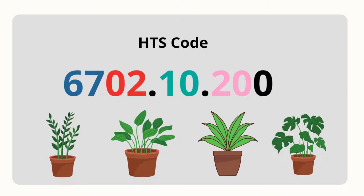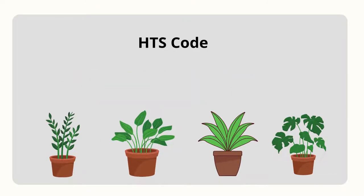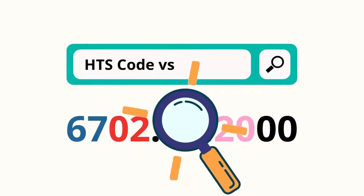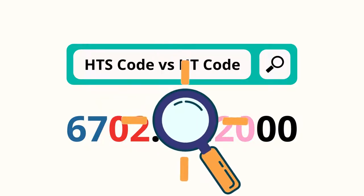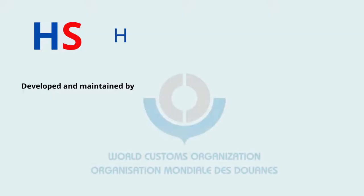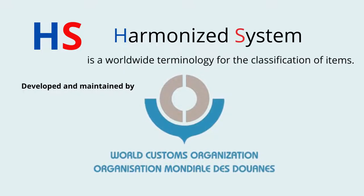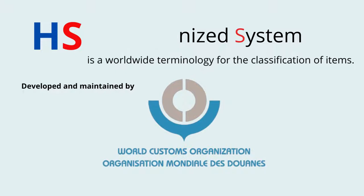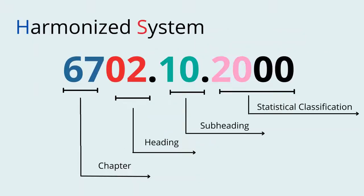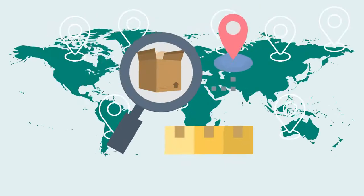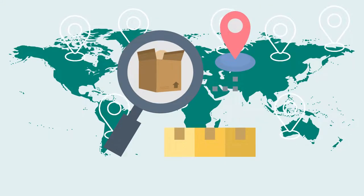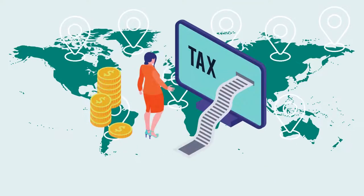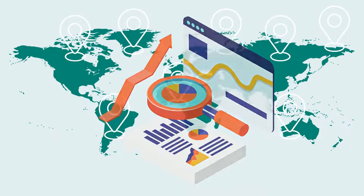Now you already know the reason why you need to understand the HTS code of your product and the steps on where to obtain it. Now it is time to understand the difference between HTS code and HS code. The HS, harmonized system, code is a worldwide terminology for the classification of items. The harmonized system is a standardized numerical method of classifying traded products. It is used by customs authorities around the world to identify products when assessing duties and taxes and for gathering statistics.